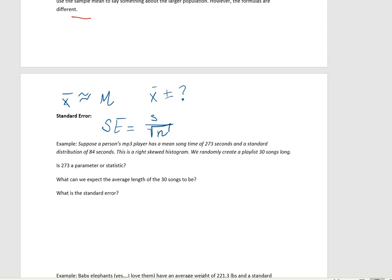So let's look at an example. Suppose a person's MP3 player, just so you guys know, that used to be a little tiny thing that we played music on that we downloaded from our computers, has a mean song time of 273 seconds and a standard distribution of 84 seconds. That is, it's a right-skewed histogram, and what we do is that we randomly create a playlist of 30 songs. So the first question is, is that 273 a parameter or a statistic?